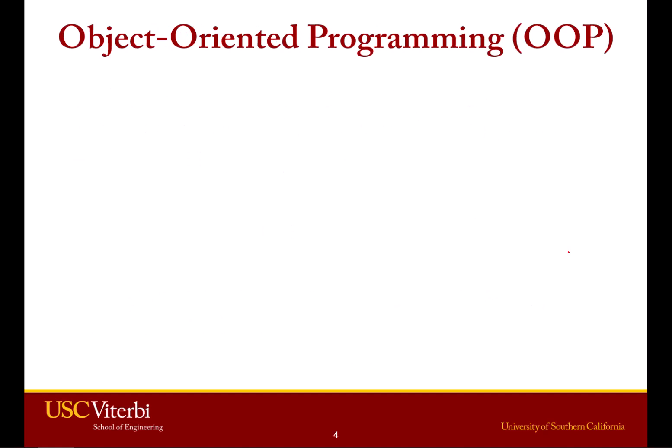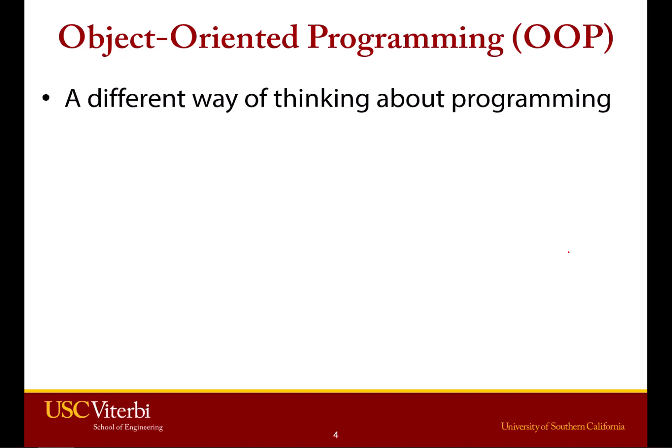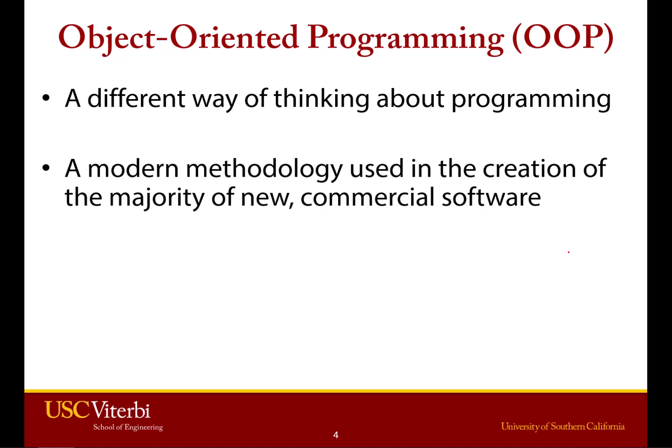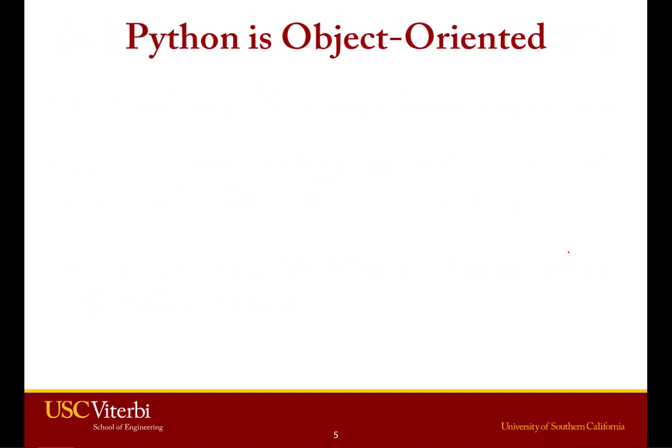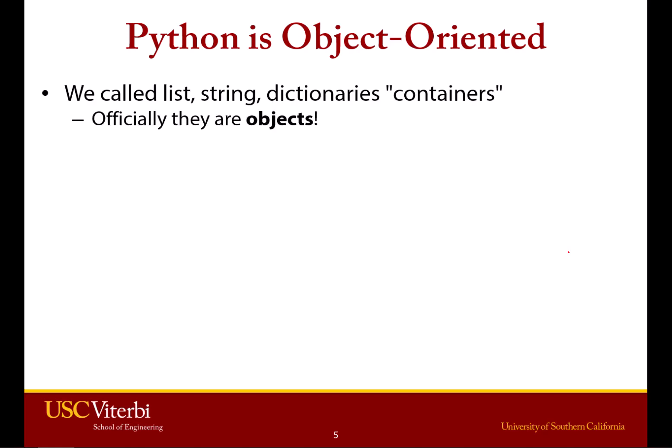You would just say OOP, by the way. Object-oriented programming is a different way of thinking about programming — basically a modern way of building software that is how almost every piece of software we use is probably designed. The core building block is what we call a software object, or just an object. Python itself is actually object-oriented. Lists, strings, and dictionaries — we've called them containers or variable types, and those are true, but technically speaking they are actually objects.